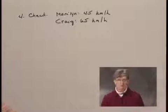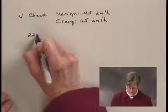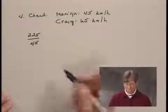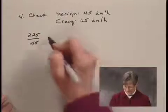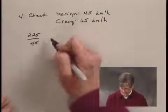Now if Marilyn traveled 225 kilometers at 45 kilometers per hour, the time that it would take her would be the distance divided by her speed and that would be 5 hours.